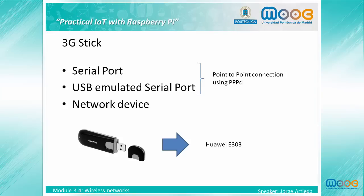There are three common ways to add 3G connectivity to our Raspberry Pi. The first option is devices that connect to a serial port, in the same way as dial-up modems. The second option is USB devices that are detected as a serial port and then work in the same way. Both of these types create a point-to-point connection using software called PPPD in Linux systems, which is very complex to configure. The third kind of devices are USB sticks that are detected as network devices. In this course we have used the Huawei E303, which is inexpensive, easy to buy, and well detected by common distributions. We recommend this kind of device as it is configured in the same way as Wi-Fi and Ethernet interfaces and does not require the complex PPPD software.